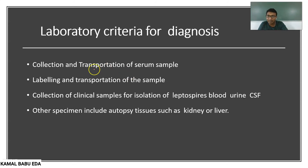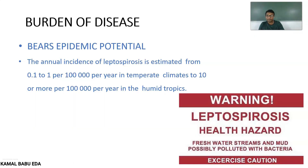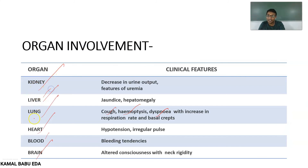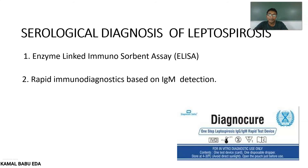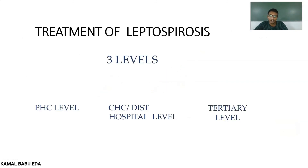Laboratory criteria for diagnosis require collection and transport of serum samples with accurate labeling. Clinical samples for isolation of Leptospira are collected from blood, urine, and CSF, and also from autopsy tissues such as liver and kidney given the organ involvement. Serological diagnosis is mainly done by ELISA (enzyme-linked immunosorbent assay) and rapid immunodiagnostics based on IgM detection.